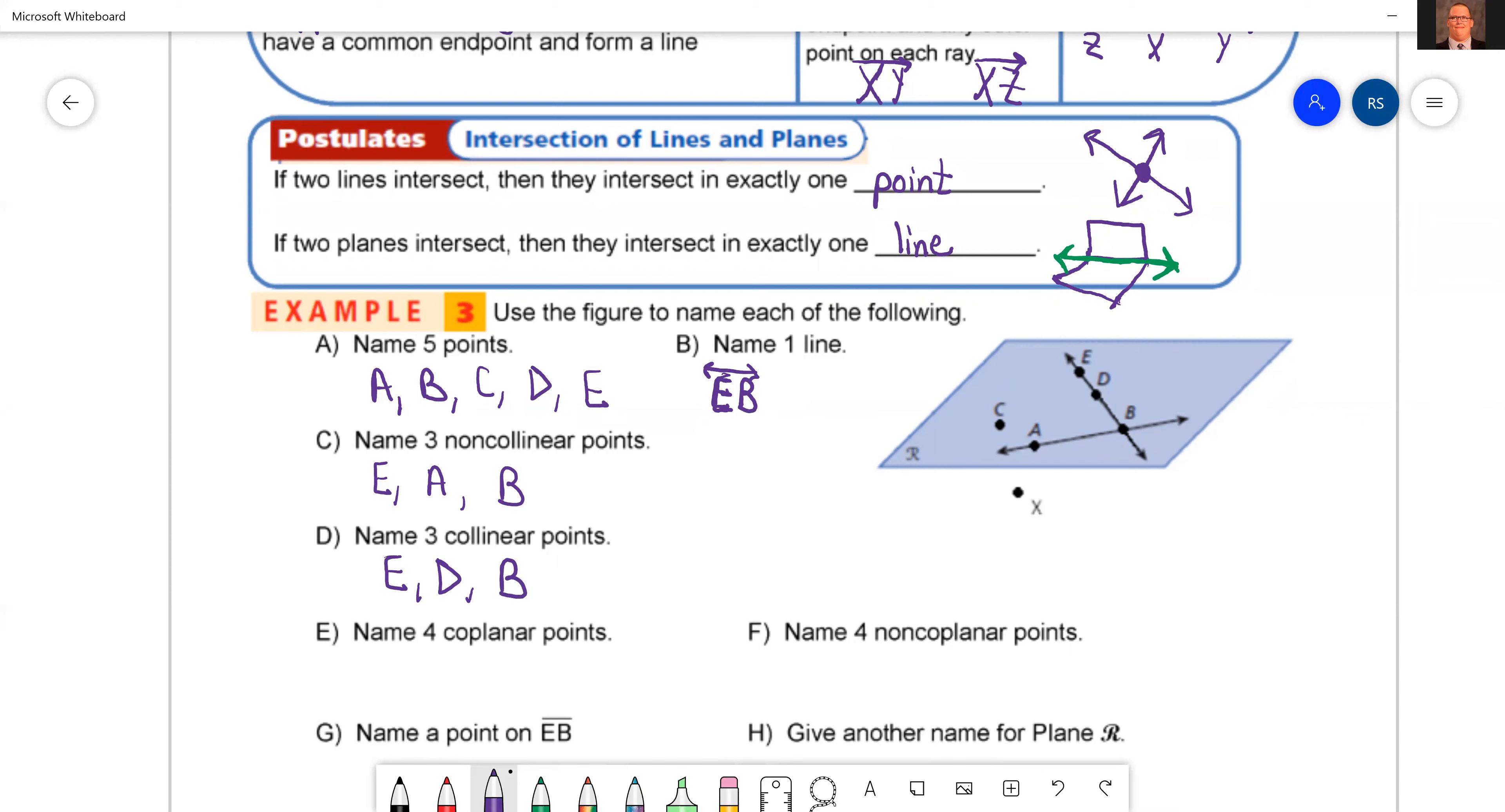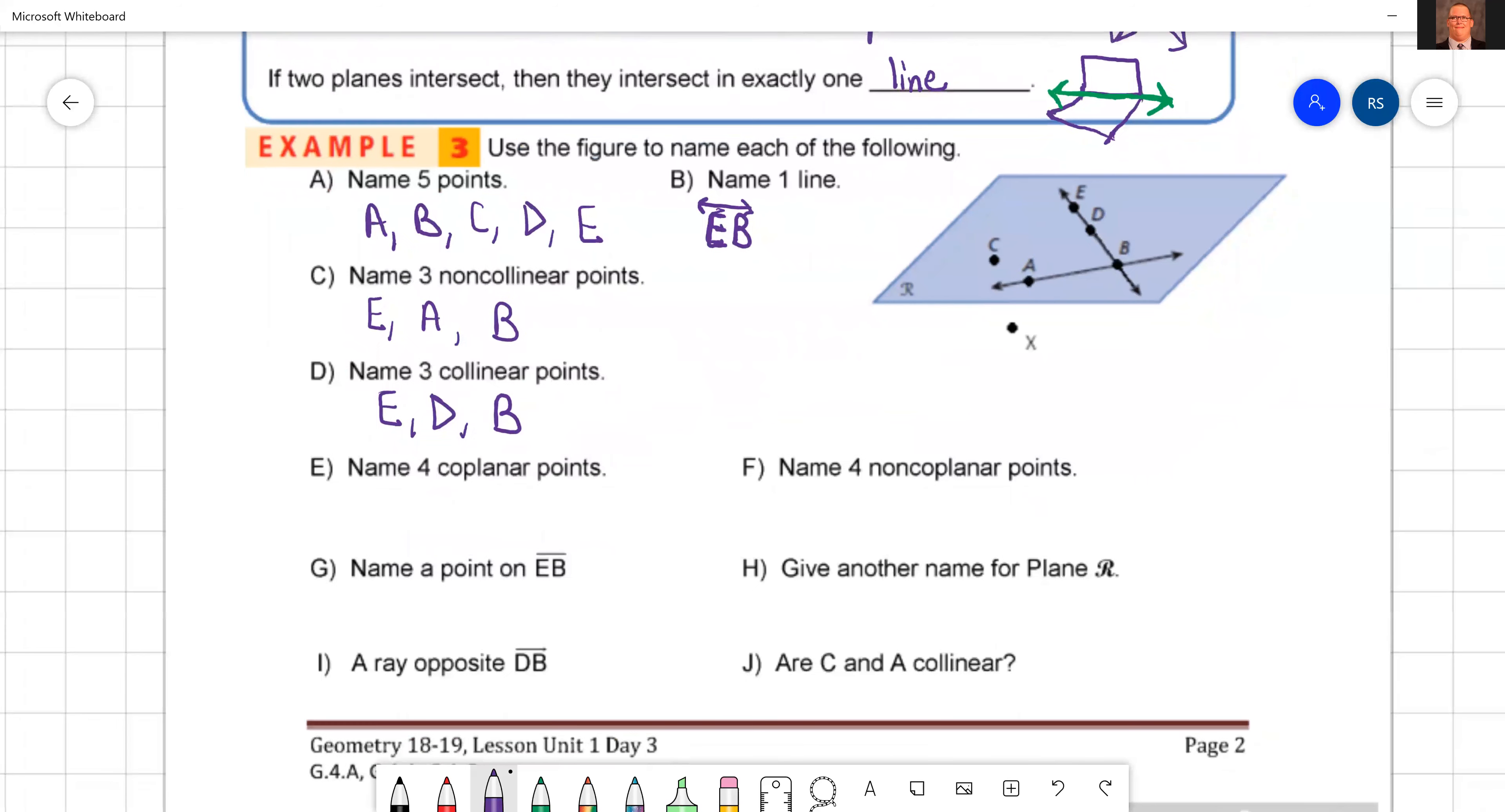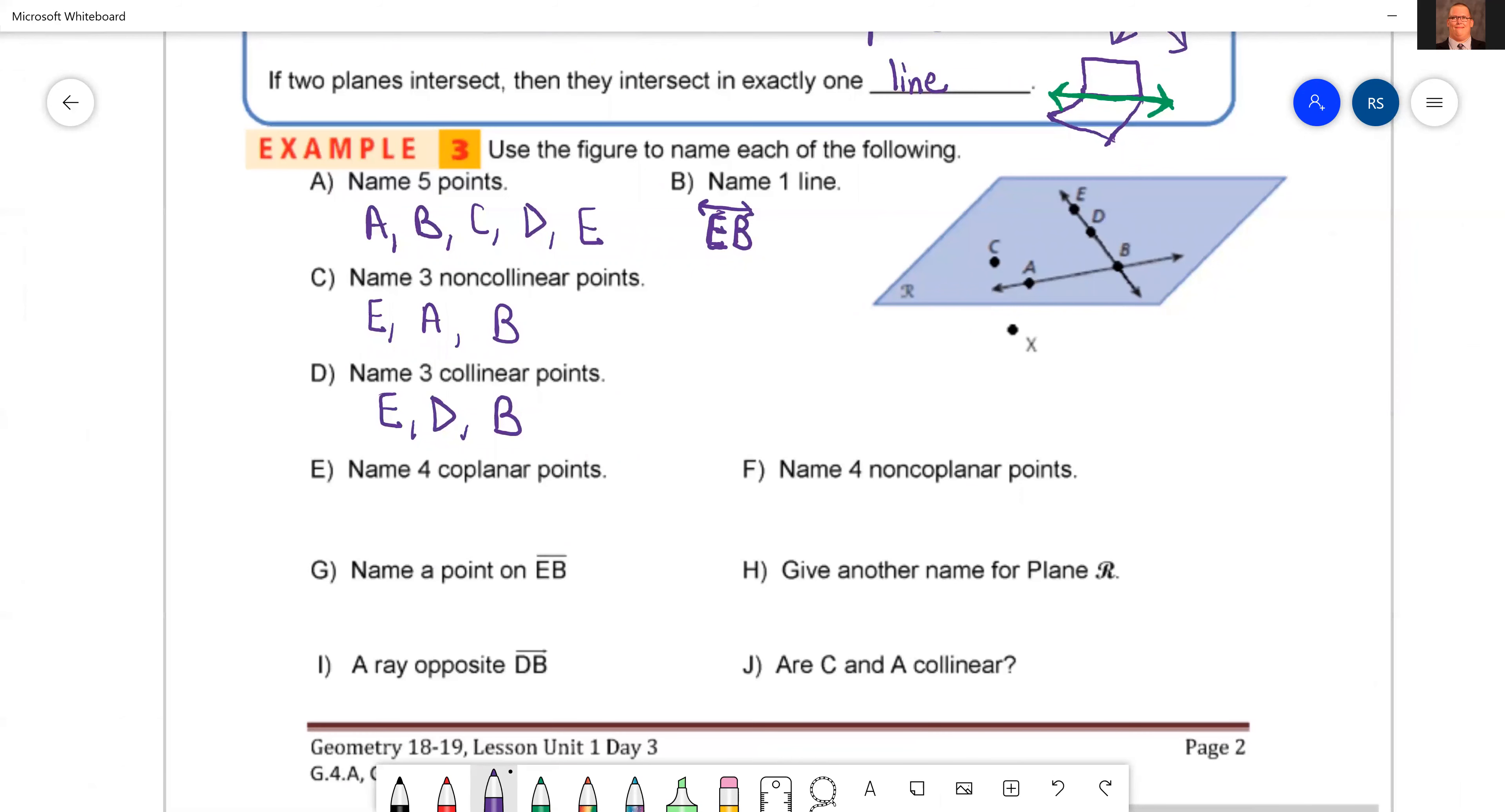And the next one, name four coplanar points. Coplanar means what? So let's name four points on the same plane. I mean, as long as they're within that blue plane, we're good. Now don't say R. R is not a point. This is a plane. It's in cursive. Don't say R.